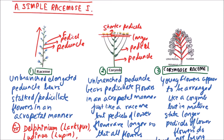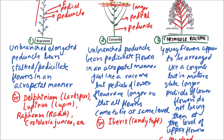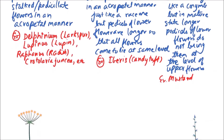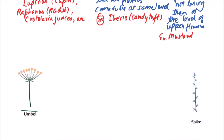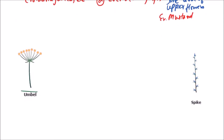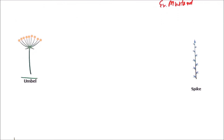Welcome to Studio Biology. In the previous video on simple racimose inflorescence, we discussed some types like raceme, corymb, and corymbose raceme. Now we will discuss some more types of simple racimose inflorescence, like Umbel.